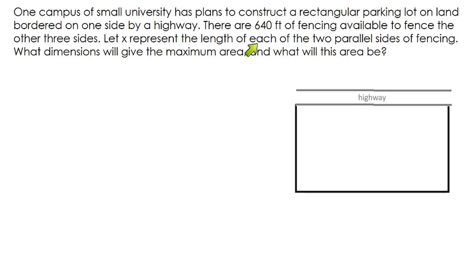Let x represent the length of the two parallel sides, and what dimensions would give the maximum area and what will this area be? So if I look at this, I'm going to define this length as x and this length as x because this is going to be the same length as this. And I know that all three of these will add up to 640. So I know that this dimension, this third dimension right here, is going to be whatever 640 minus the other two sides are.